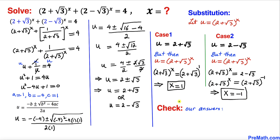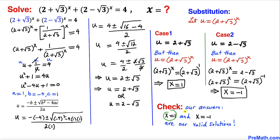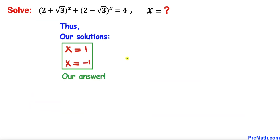We can verify our answers by plugging x equals 1 and x equals negative 1 back into the original equation. Both values satisfy the equation, so both are valid solutions. Thus our solutions are x equals 1 and x equals negative 1. Thanks for watching and please don't forget to subscribe to my channel for more exciting videos.